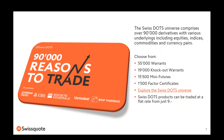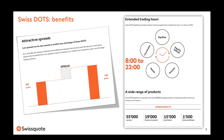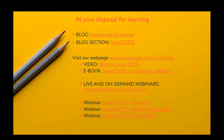You can choose from warrants, knockout warrants, mini futures, and factor certificates. You can trade Swiss DOTS products at a flat rate from just nine Swiss francs. The Swiss DOTS market offers attractive spreads — the difference between bid and ask price — that are always available in a very transparent way from our platform. You can also benefit from extended trading hours from 8 a.m. to 10 p.m.